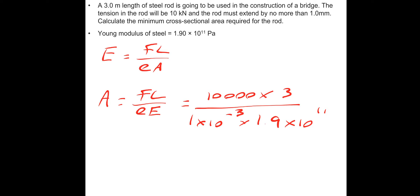That gives us 157.89 times 10 to the minus 6 square meters, which is rounded to 1.6 times 10 to the minus 4 square meters. Hope that went okay. Let's have a look at the next one.